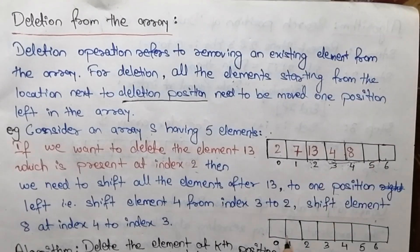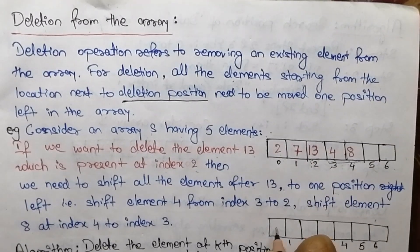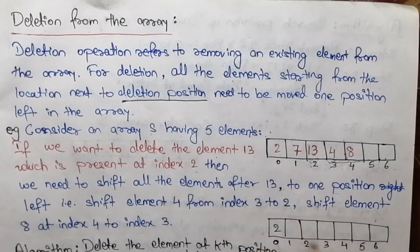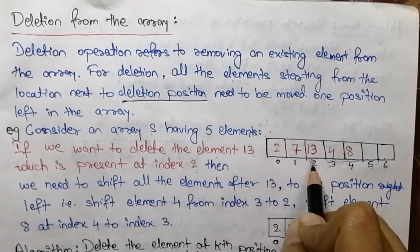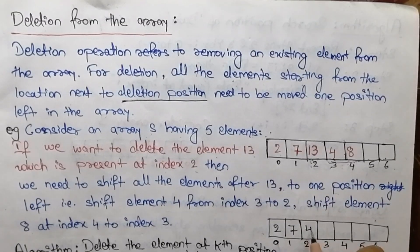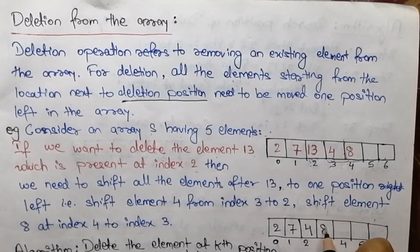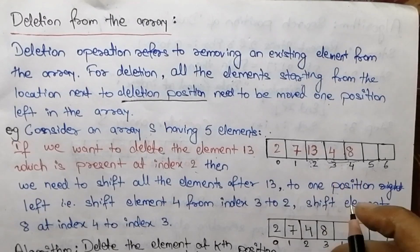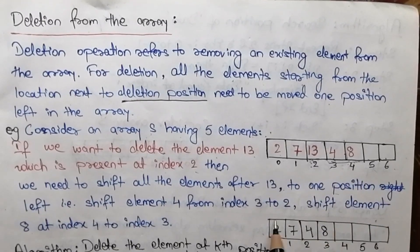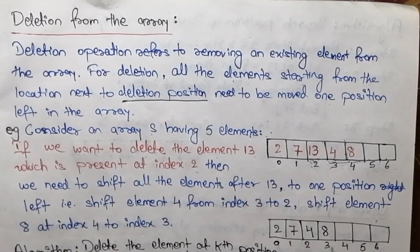After deletion of 13, the array will look like this: 2 will be at its position, 7 will stay, then 4 will be shifted to index 2, and 8 will be stored at index 3. The element 13 is now deleted.